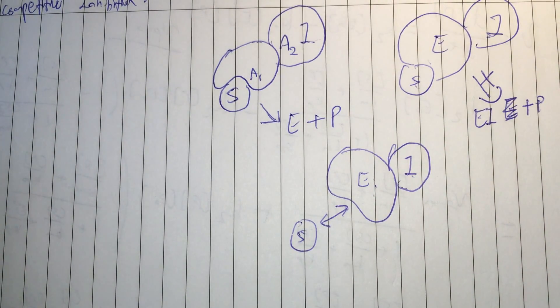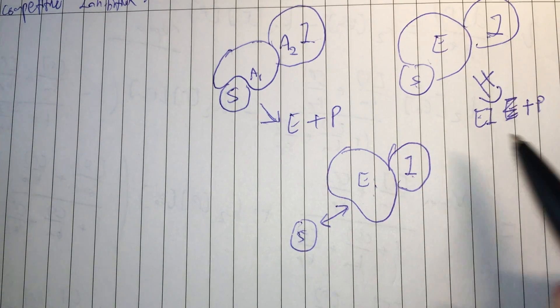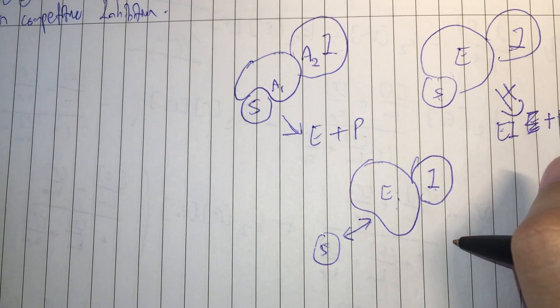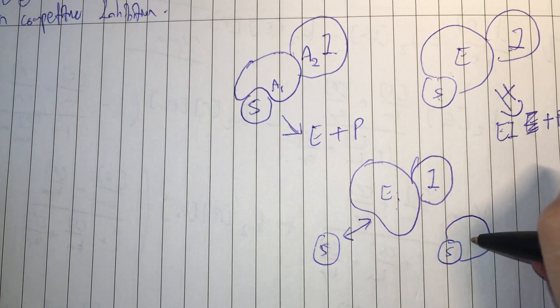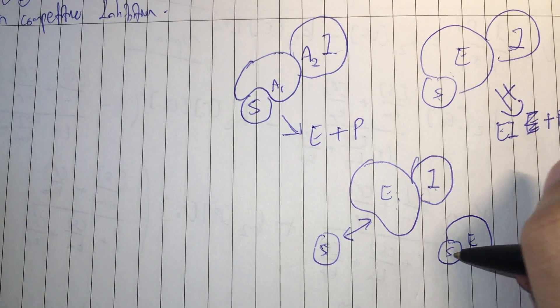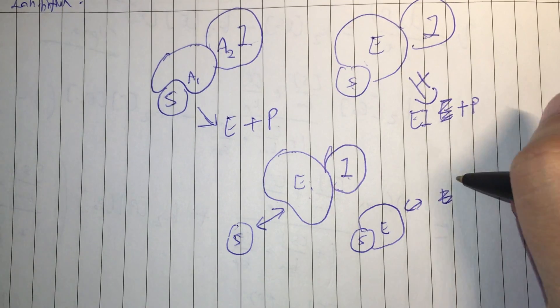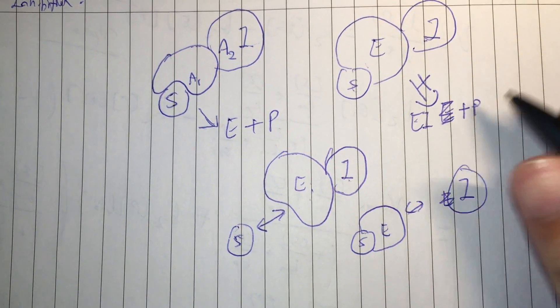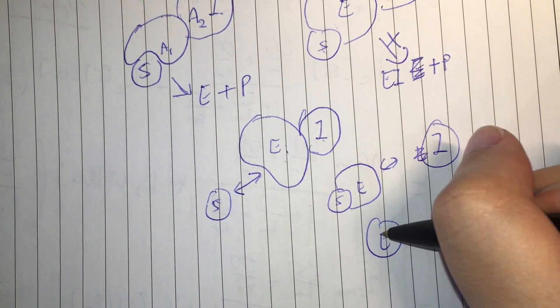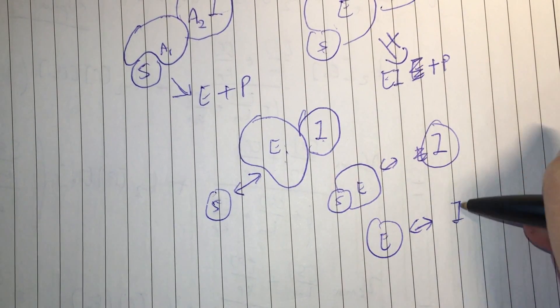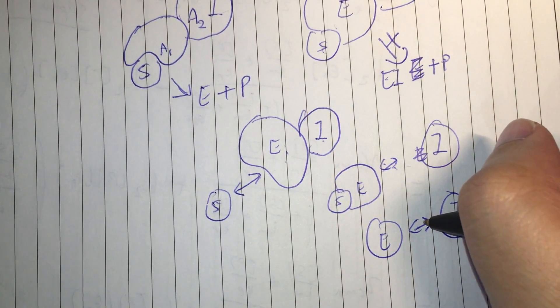And neither does the binding of the enzyme to the substrate affect the affinity of the enzyme to the inhibitor. So in a sense, both these equilibrium constants are the same.